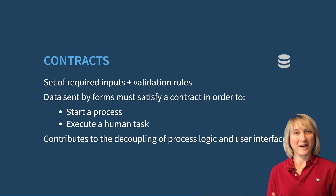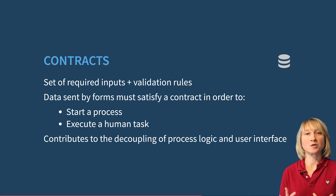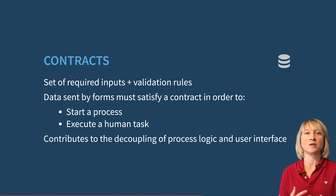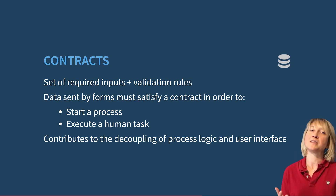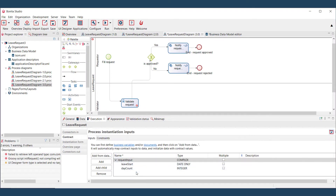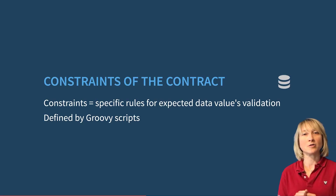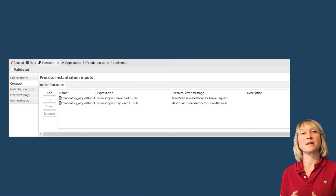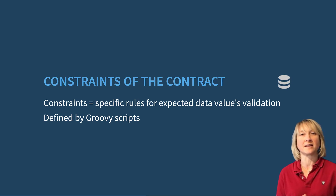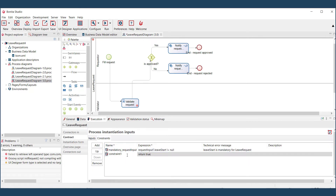Contracts are used to ensure consistency between the data expected by the process and the user interface. A contract is a set of required inputs and validation rules used to start a process instance or execute a human task. An invalid contract will prevent Bonita Engine from performing those actions. Contracts help with automation in Bonita UI Designer, but if you use your own forms, the contract is the interface that guarantees correct execution. Required inputs and constraints are defined in Bonita Studio, with some constraints automatically set up based on the BDM configuration and defined by Groovy scripts. You can add as many constraints as needed.